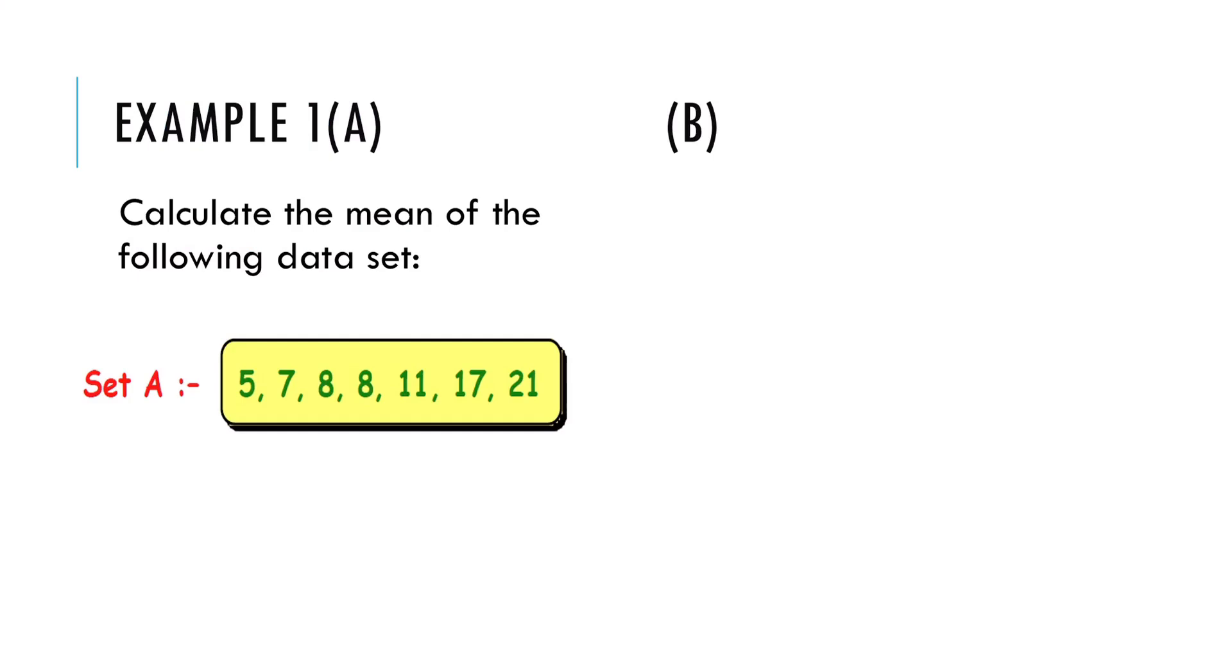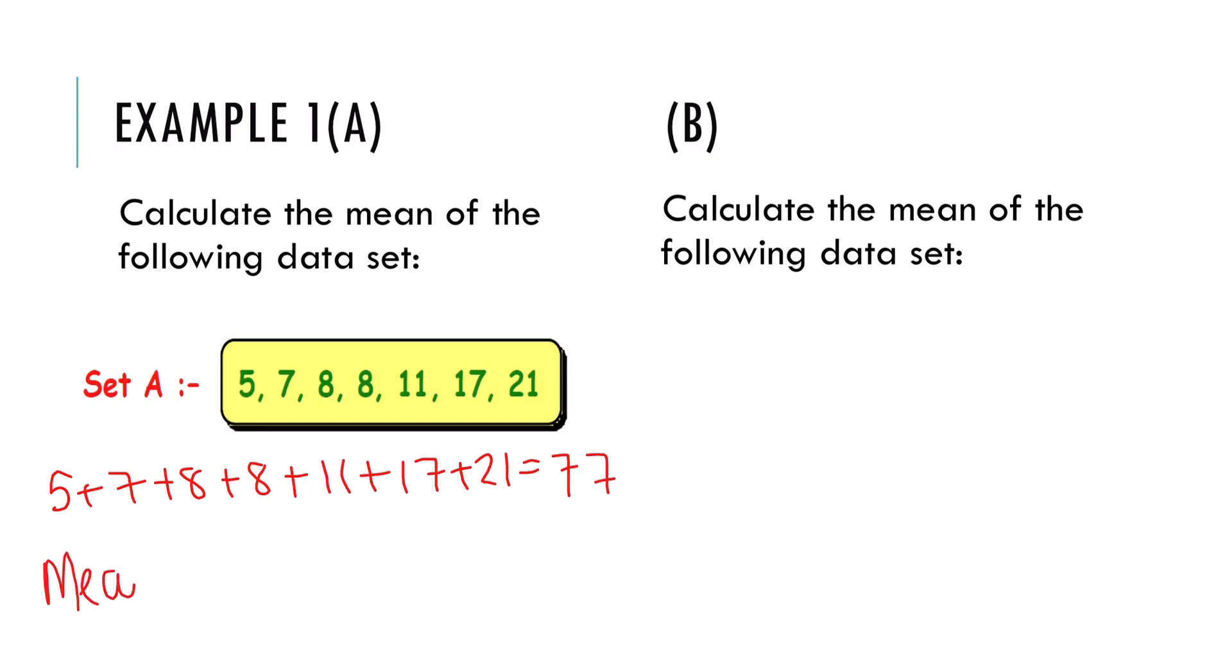So let's start with an example. Calculate the mean of the following data set. Now to do this we start by adding together the numbers. You can do this in your head or using a calculator. So when we add these together we get 77. The second part in order to calculate the mean is you divide the number you have just found, the 77, by how many numbers you were given. 1, 2, 3, 4, 5, 6, 7. 7 numbers. 77 divided by 7 gives me a mean of 11 and it is important to show all of your working.